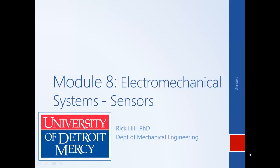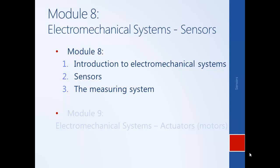In this module, we will begin to discuss electromechanical systems, in particular sensors. So far in this course, we've modeled electrical systems and mechanical systems. In this module, we will begin to discuss systems that have aspects of both electrical and mechanical systems — electromechanical systems. We will first begin with sensors, and in a subsequent module we will talk about electromechanical actuators. We will also talk about how the sensor fits into the larger measuring system, and how the aspects of the measuring system affect the analysis and design of control systems in general.